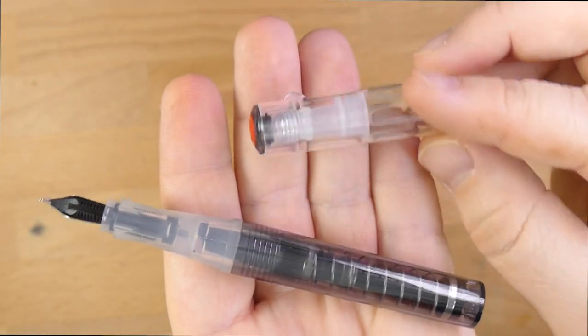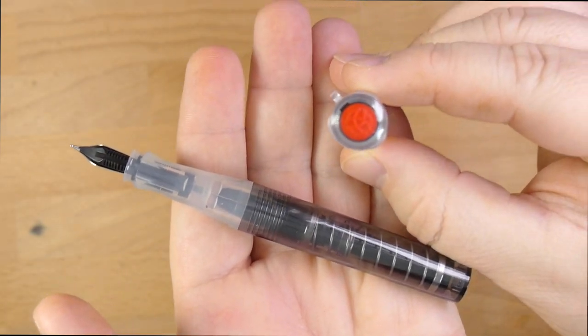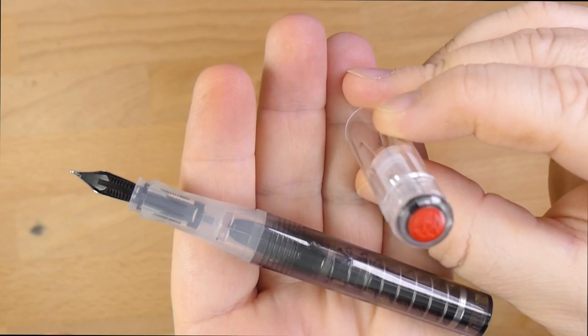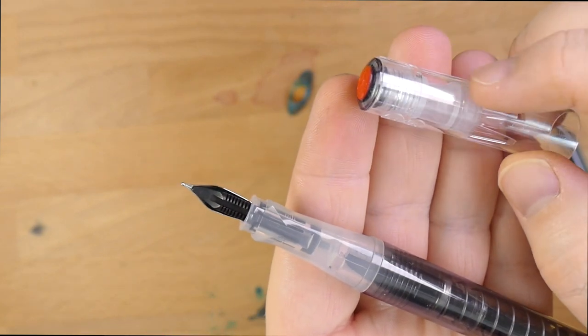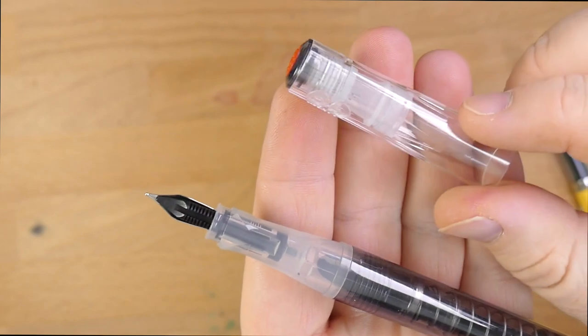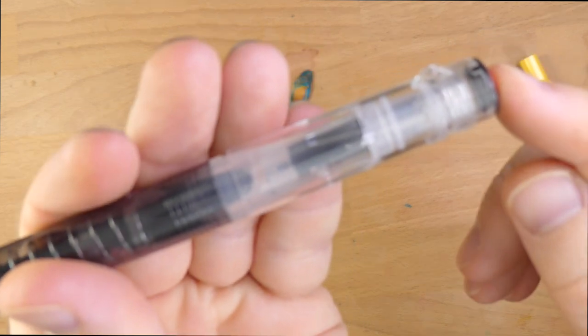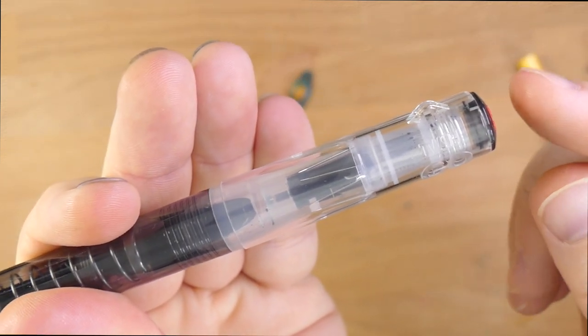Anyway, it's got this nice transparent cap, which I dig. You have the TWSBI logo up on the top there, with those interlocking designs. And then you have this other plastic bit inside the cap, and that's a cap liner. And that is what snaps onto this front piece on your cap. Nice positive click.